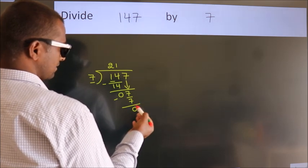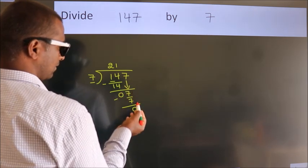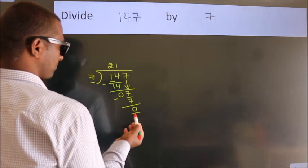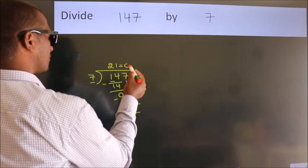After this, no more numbers to bring it down. And we got remainder 0. So, this is our quotient.